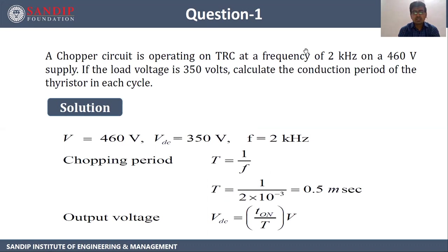A chopper circuit is operating on TRC at a frequency of 2 kHz on a 460 volt supply. If the load voltage is 350 volts, calculate the conduction period of the thyristor in each cycle. So input voltage is DC, that is 460 volts as given in the question, and output voltage is again variable DC, that is 350 volts. Frequency is given as 2 kHz.